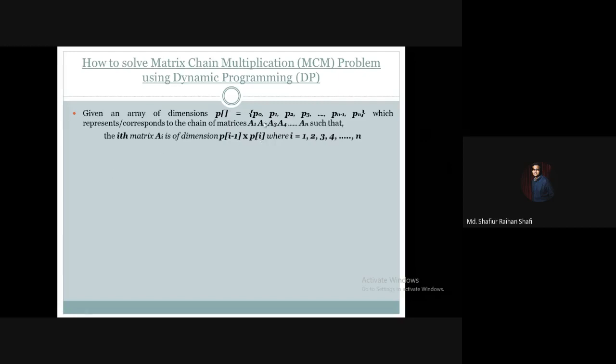For example, matrix A3 has dimension P2 multiplied by P3, and matrix A4 has dimension P3 multiplied by P4. Generally, for matrix Ai where i runs from 1 up to N, the dimension of matrix An would be P[n-1] multiplied by Pn. So initially, we are given a chain of matrices and a dimension-related array, whose elements indicate the dimensions of the matrices.